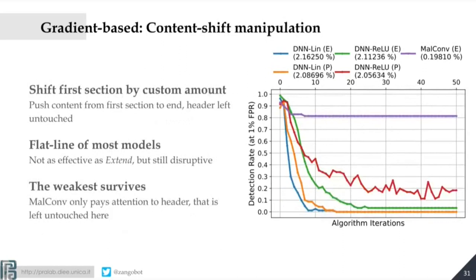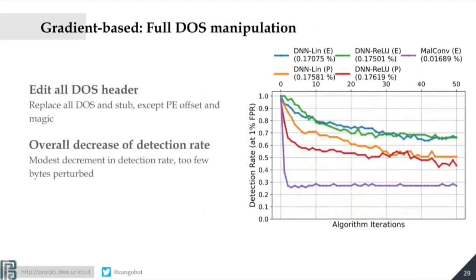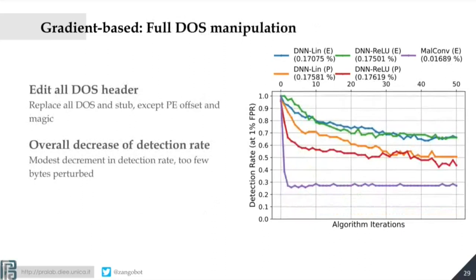There is another attack, and here there is one purple line that is flat at 80%. You might say the model is robust — the attack is having no effect. The problem is we analyzed this: in the region where we're injecting content with the section manipulation, the classifier has zero gradients. It's not that it's robust — it's that everything outside the first part of the program has zero gradient, meaning it's not even looked at by the network when making a decision. In all the other plots, the purple line is the lowest one. MalConv just looks at the first bytes of the file.